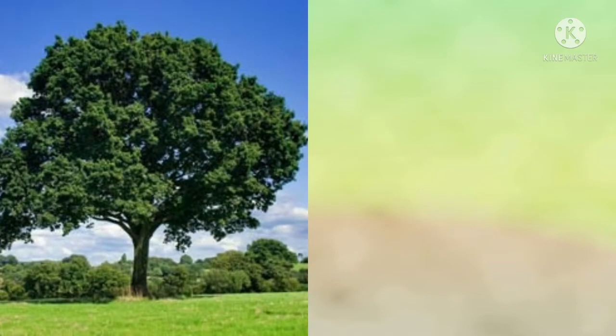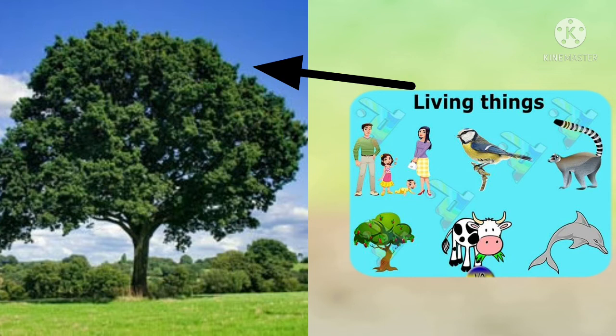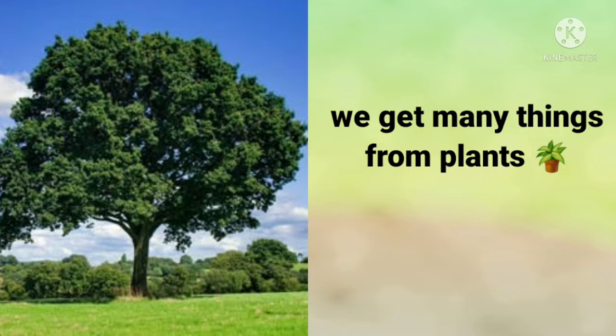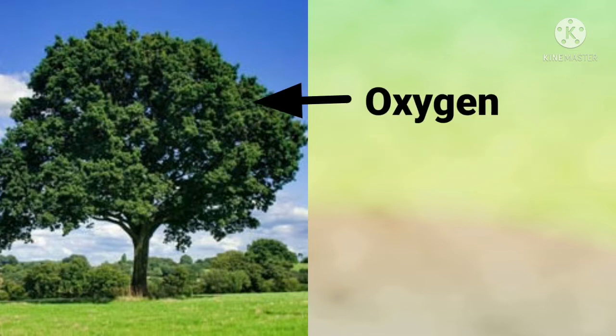Now we are going to discuss about the uses of plants. Plants make our world beautiful. Plants are very essential and useful to us — they are vital to life on earth. All living things are directly or indirectly dependent on plants. We get many things from plants. Plants produce oxygen that other living things breathe, and plants keep the air fresh and clean.